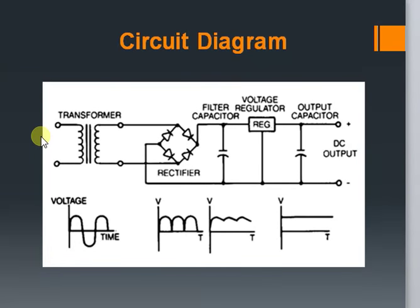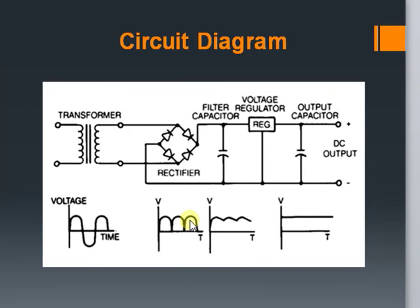This is the circuit diagram of a simple linear power supply with the waveforms at its different stages. The primary side of the transformer is connected to AC mains and the secondary side gives the step-down voltage. This is the rectifier bridge — its output is a pulsating DC waveform as described. Now this output is given to the filter capacitors, which smoothen the wave. This waveform is then applied to the regulator IC which gives a constant DC voltage at the output.